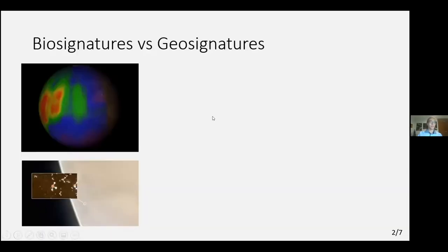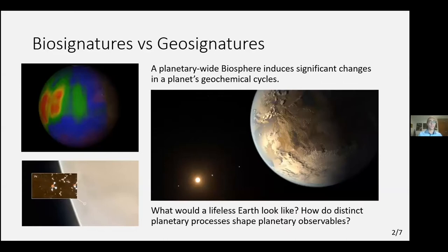I'll start by talking about biosignatures, as has been discussed in this conference already. There are several biosignatures that we know from our solar system — both methane on Mars and phosphine on Venus — which are out-of-place gases that we really would not expect to find. At the same time, they're at very low concentration, and if they do represent signs of life, it would be microbial, very primitive life. Now I want you to think about a planetary-wide biosphere, just like the one we have on Earth for millions of years, and the kinds of changes that such a biosphere could induce on a planet — for instance in its geochemical cycles and pretty much every aspect of the planet.